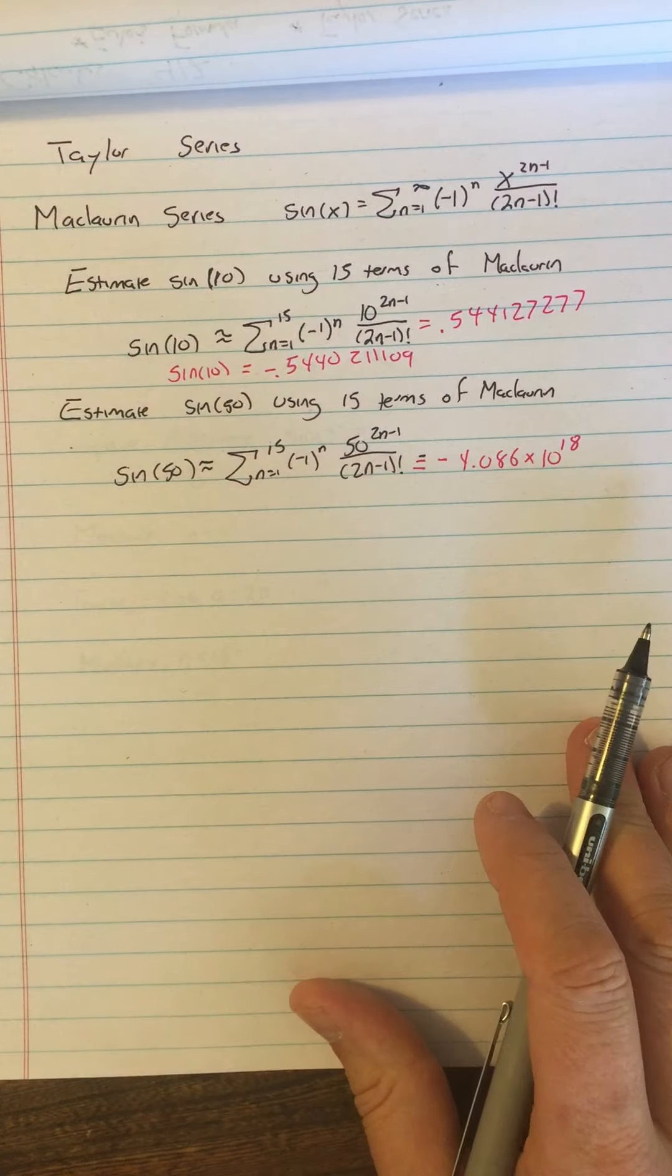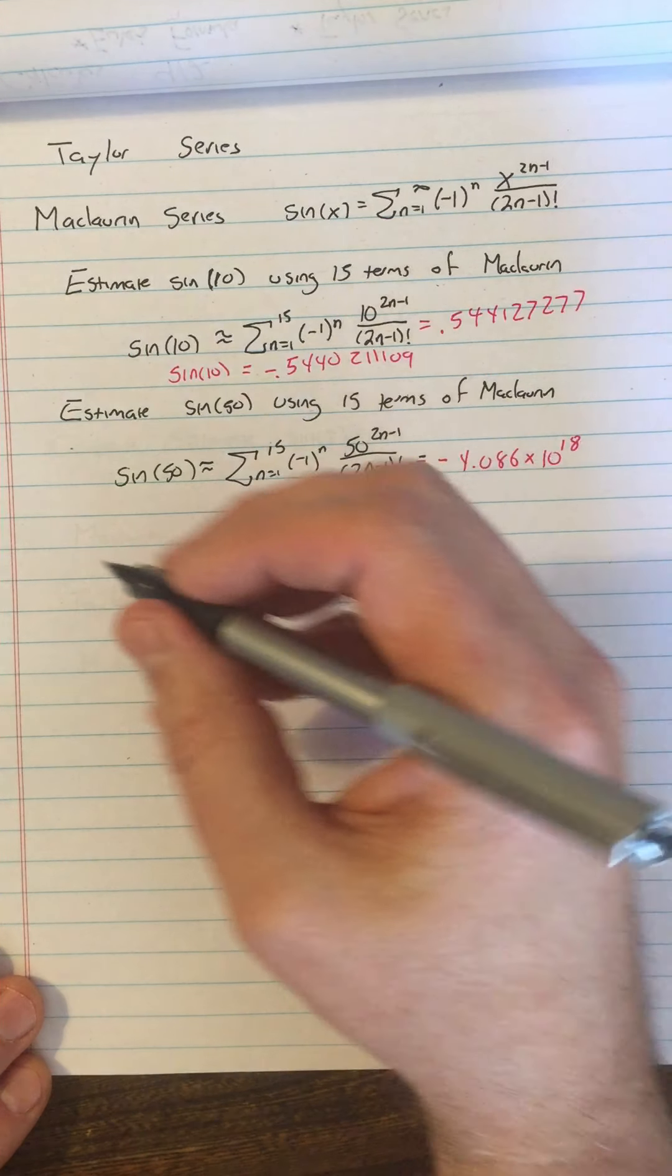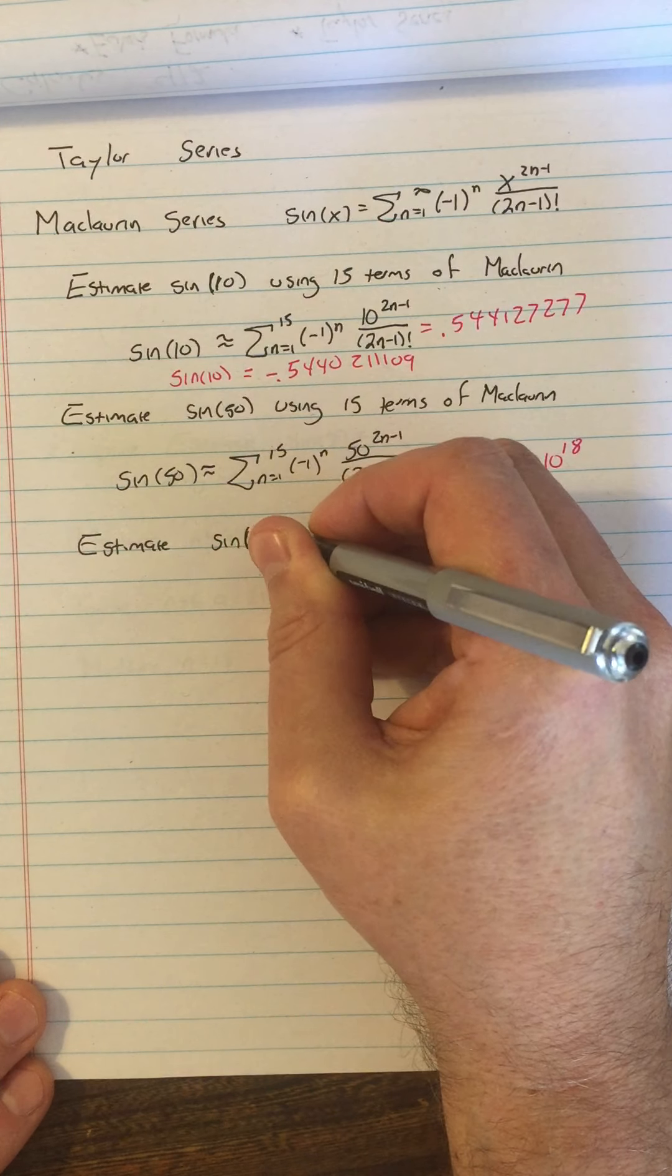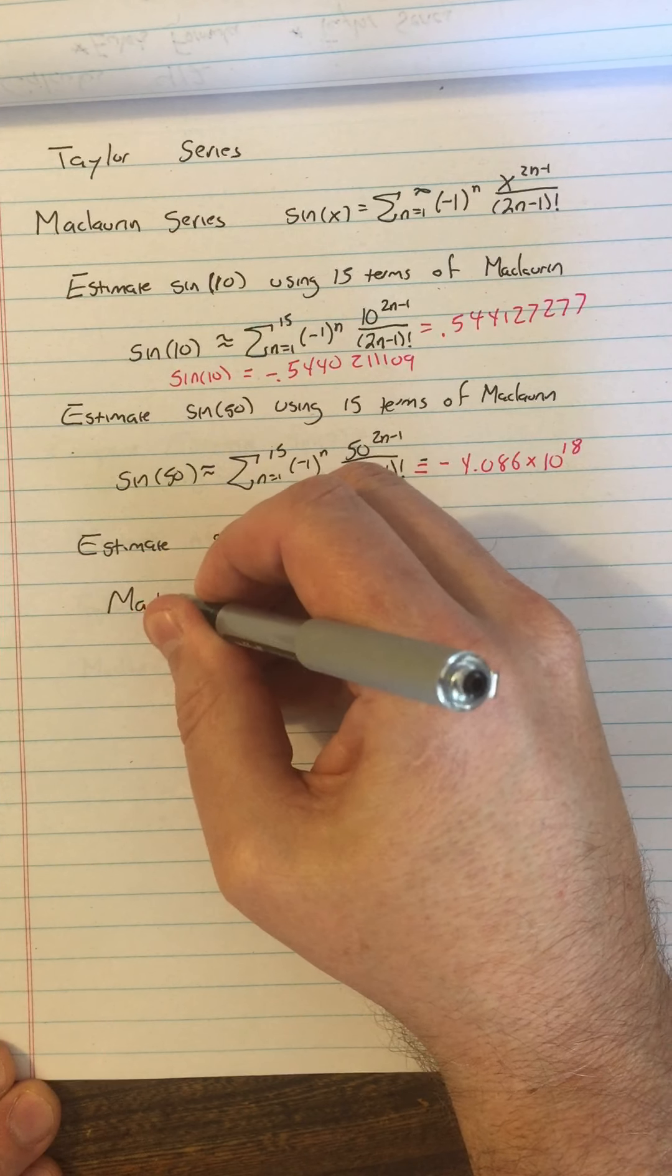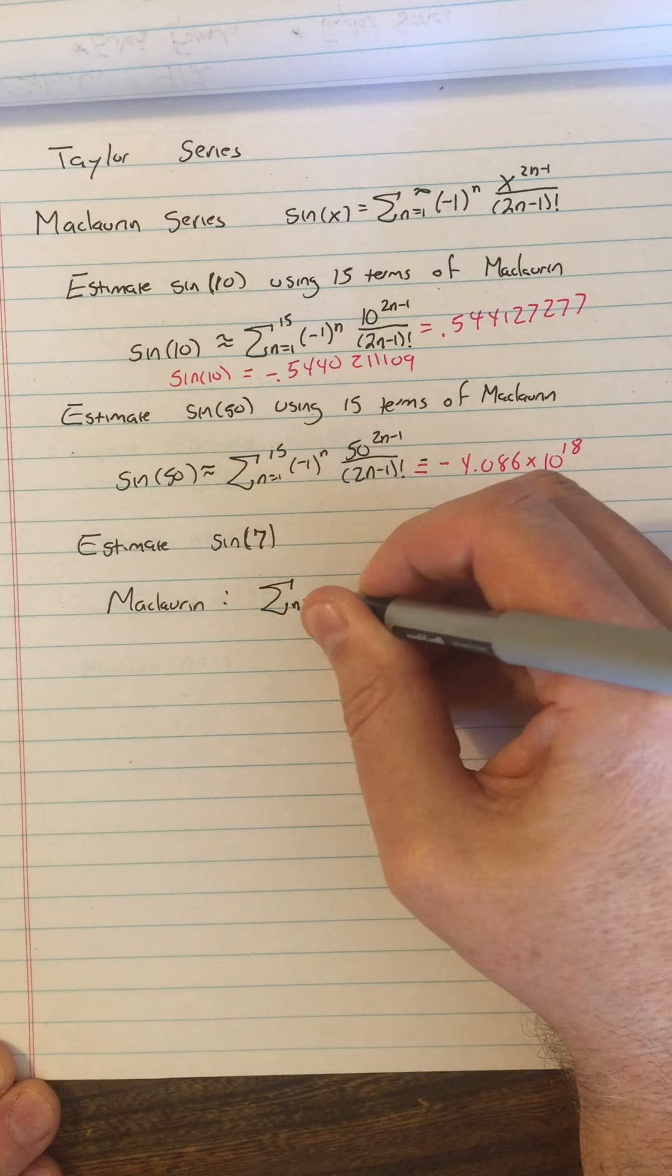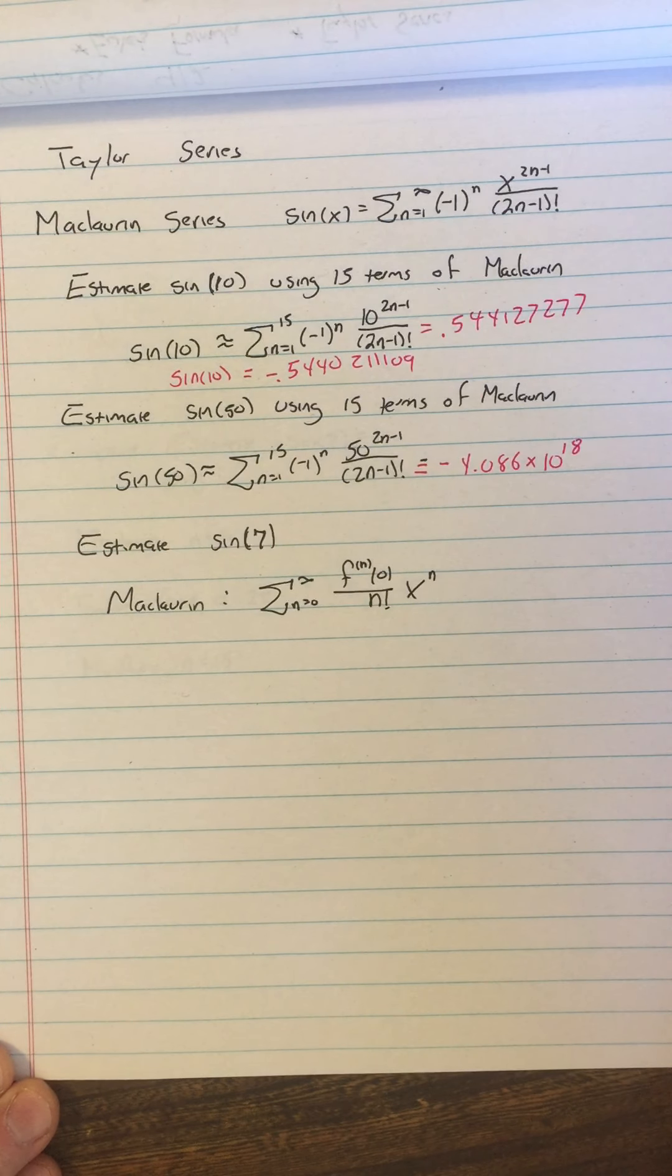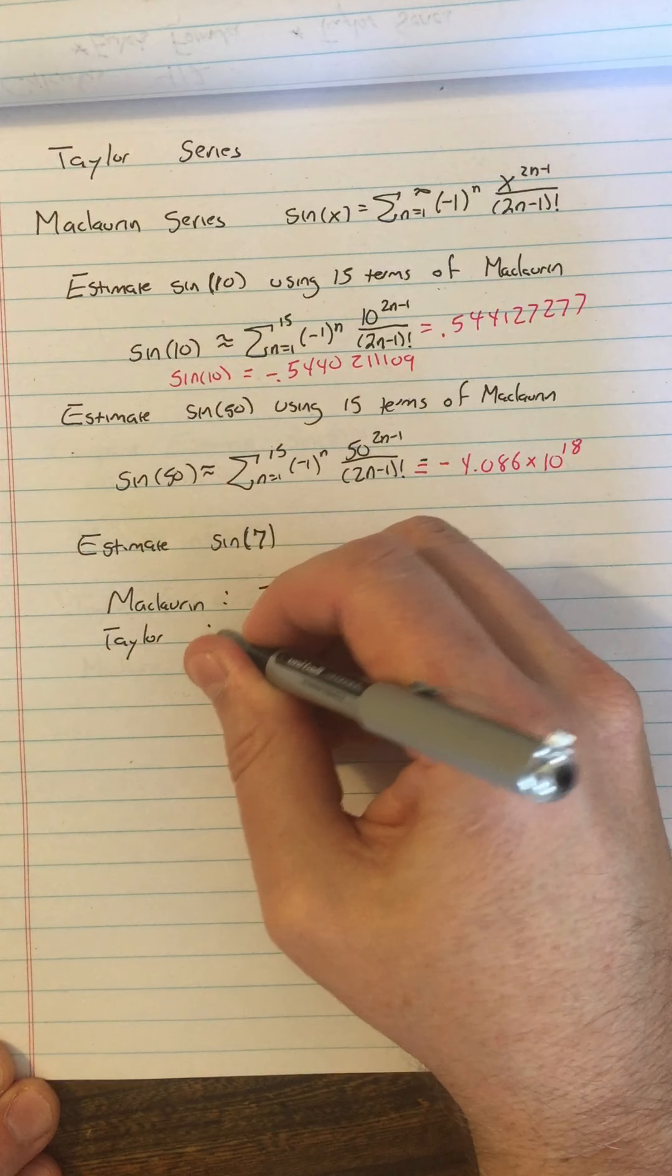So what we're going to look at now is, suppose we want to estimate sine of 7. So we'll take a little bit. Again, I'm just cutting the numbers down so that we can sort of see what's going on. So we're going to remember that our Maclaurin series, for any function generally, is the sum from n equals zero to infinity of the nth derivative evaluated at zero over n factorial times x to the n. That's our standard Maclaurin series.